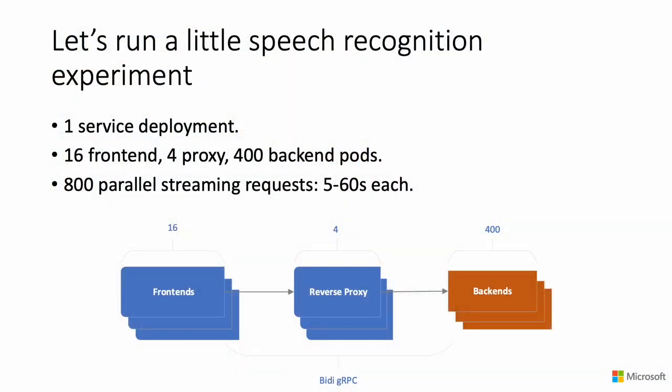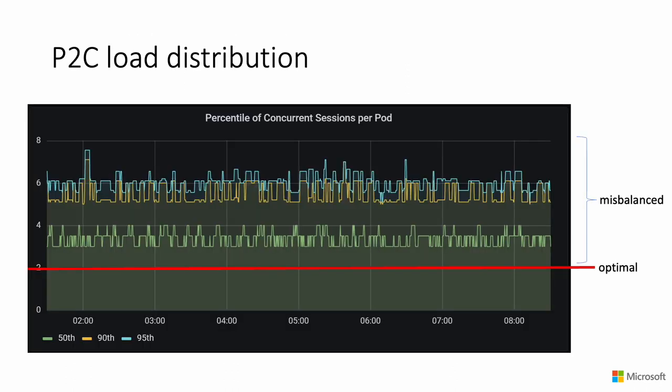To illustrate the load balancing problem, let's conduct a little experiment mimicking a speech deployment. The setup is composed of 16 front-end pods talking to a service of 400 back-end pods via a 4-pod reverse proxy running the power-of-two choices load balancing algorithm. We run 800 concurrent sessions mimicking a typical speech request duration of 5 to 60 seconds. Under uniform circumstances, each back-end pod should only get two requests at a time.